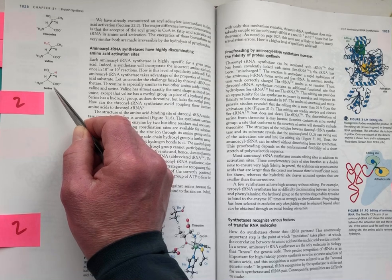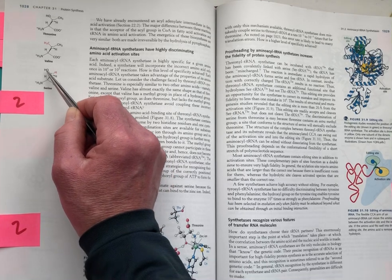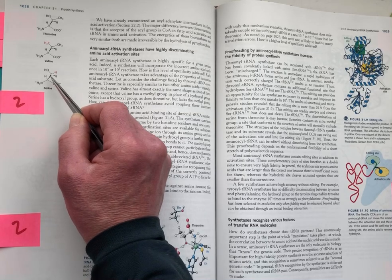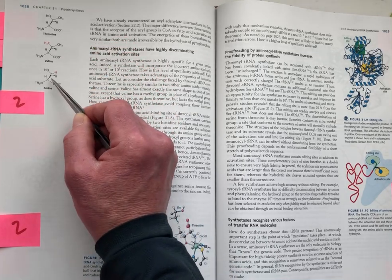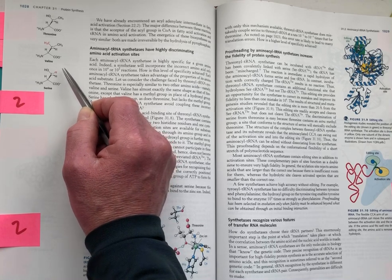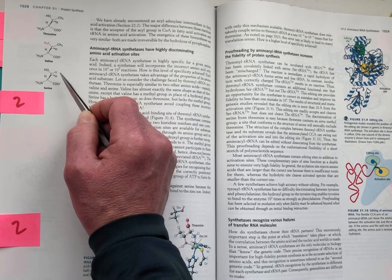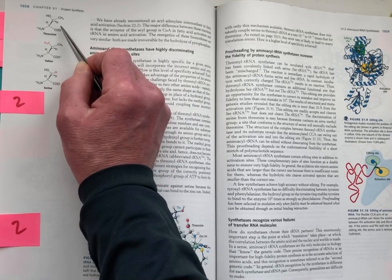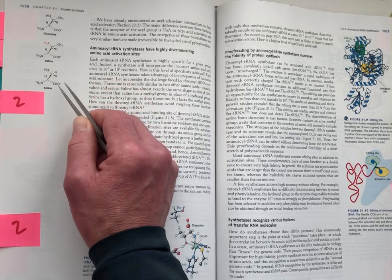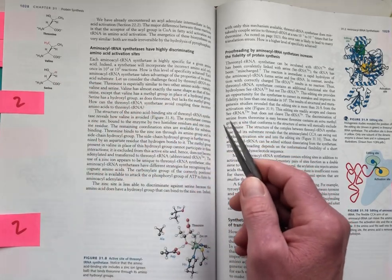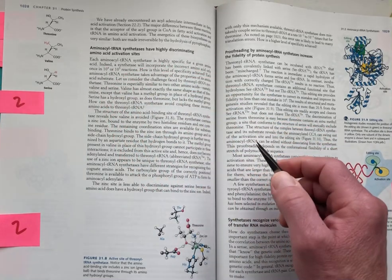Likewise, serine has the same chemical group, this hydroxyl group, as threonine, and is simply missing one of the methyl groups. So it's a real puzzle how the synthetases can identify the cognate amino acid and only use the correct one, in this case threonine, and avoid similarly shaped residues with similar chemical properties.